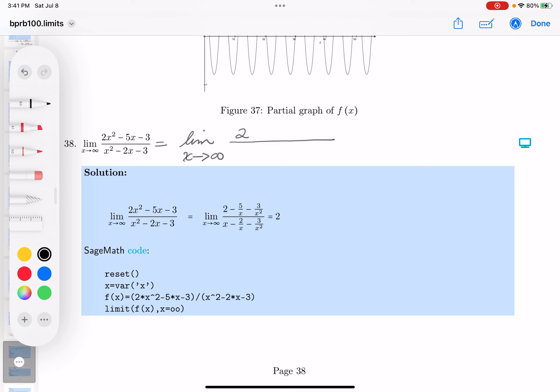What do you get? 2 minus 5 over x minus 3 over x squared. What do you get on bottom? You get 1 minus 2 over x minus 3 over x squared.